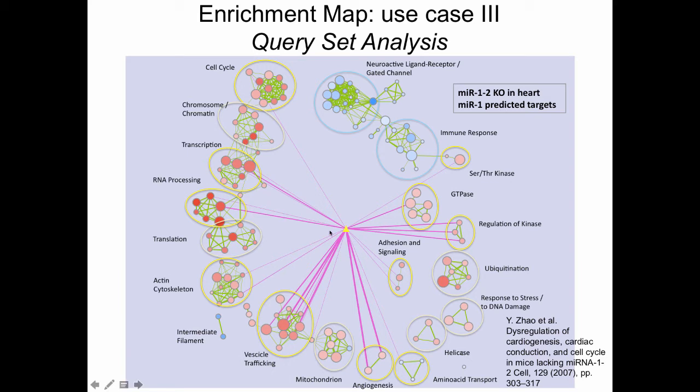The last use case is getting at this idea of the master regulator I told you about this morning. We took a public gene expression dataset where somebody had knocked out a microRNA in the heart in mice. They collected gene expression data with the microRNA present and with the microRNA knocked down. We created an enrichment map showing a bunch of pathways go up - all these red ones - and a few pathways go down. You might expect a lot of pathways to go up because microRNAs are negative regulators. If you remove the negative regulators, everything they're repressing might go up. But we wanted to see how the microRNA is linked to these pathways.